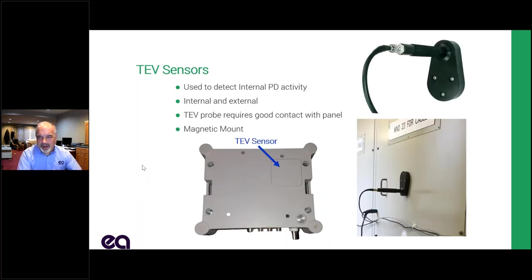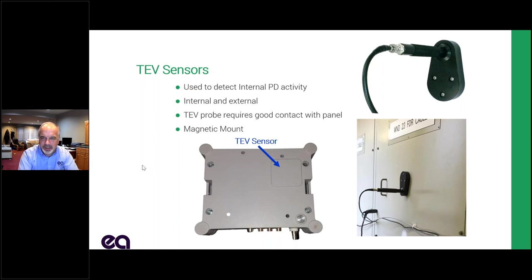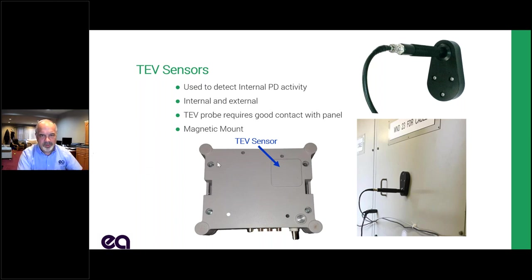TEV sensors pick up voltage through capacitive coupling — through the plastic on the back of our node, through the paint, through the texture on the front of the switchgear. All we need is two plates closely parallel to each other and we'll pick up that voltage. We don't need a lot of capacitance because we've got a very high frequency pulse — in the megahertz region — so we can pick those up right through paint and plastic. We've got one built into the node and an external one that can be plugged into the node for the second sensor.